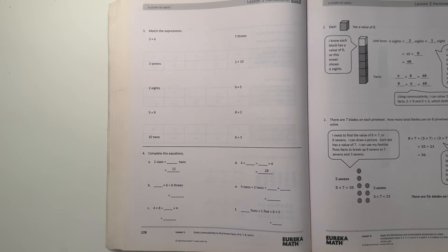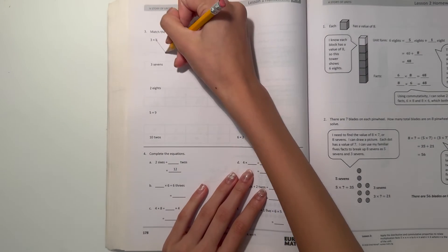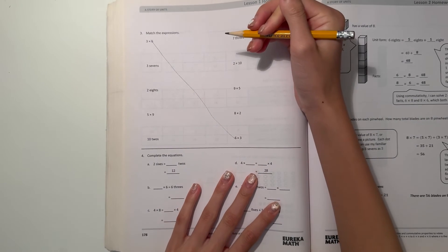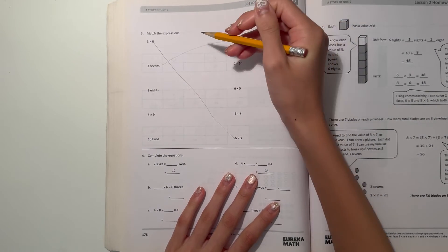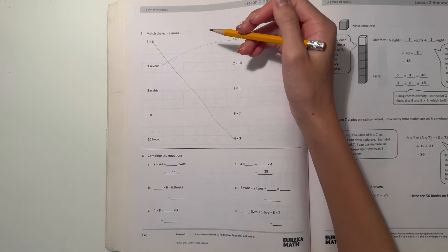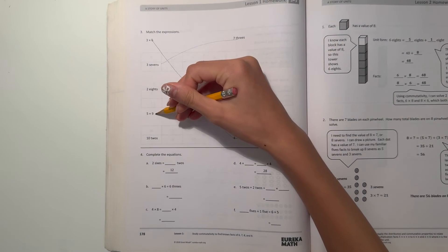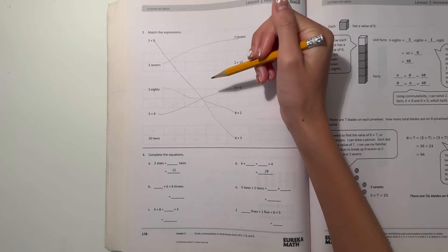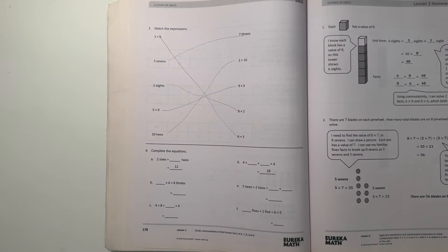So now match the expressions. Alright, well, 3 times 6 is the same as 6 times 3. And 3 7's is the same as 7 3's, but it's just flipped backwards. And 2 8's is the same as 8 times 2. And 5 times 9 would be 9 times 5, flipped backwards. And 10 2's would be 2 times 10.